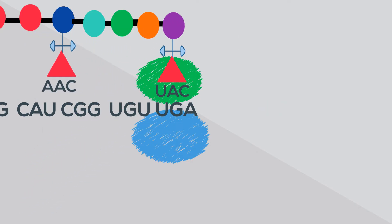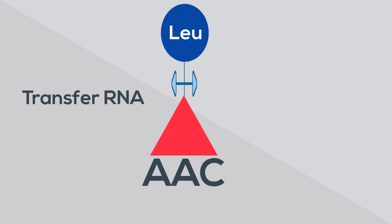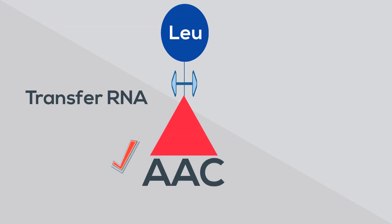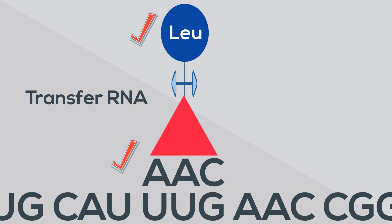In this example, the stop codon is UGA. A transfer RNA has an anticodon attached and an amino acid. The anticodon is a unit made up of three nucleotides that correspond to the three bases of the codon on the mRNA.